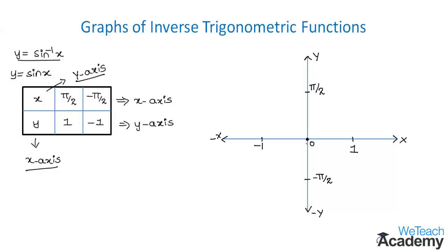Now let us plot the different values of y corresponding to the values of x on a graph sheet. So for x equal to pi by 2, the value of y is 1. So here we get a point.